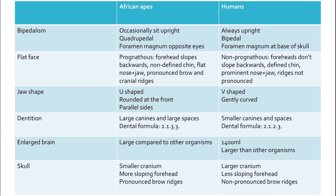For jaw shape: in African apes, their jaw is U-shaped — rounded at the front with parallel sides, meaning teeth near the back are parallel to the other side. In humans, the jaw is more V-shaped with a gentle curve at the front. For dentition: African apes have larger canines with large spaces between canines and premolars, and a dental formula of 2-1-3-3. In humans, the canines are smaller with smaller spaces, and the dental formula is 2-1-2-3.